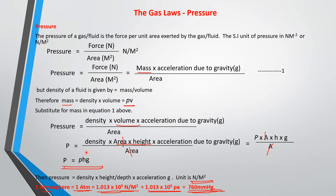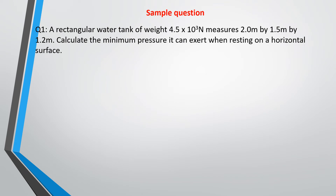We have the manometer and the barometer for pressure measurement. Now let's solve a problem to apply the two formulas we just discussed. The question says: a rectangular water tank of weight 4.5 × 10³ Newtons measures 2.0 meters by 1.5 meters by 1.2 meters. Calculate the minimum pressure it can exert when resting on a horizontal surface. The force (weight) given is 4.5 × 10³ Newtons.